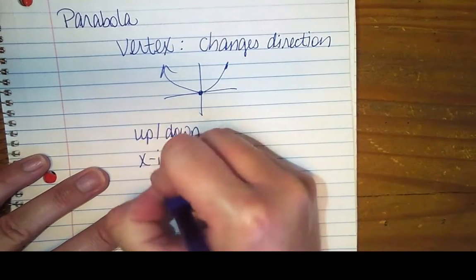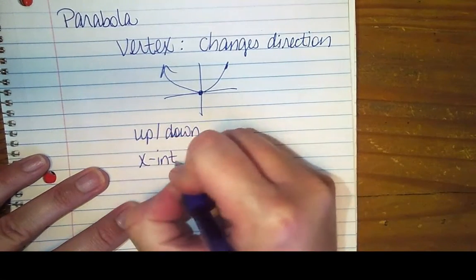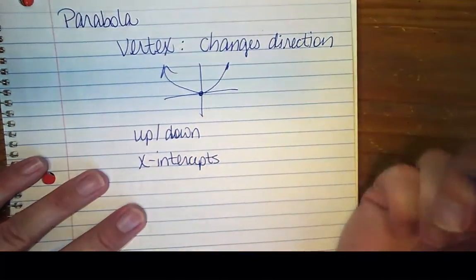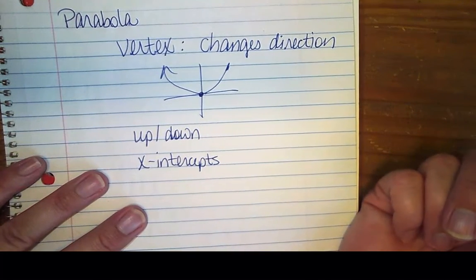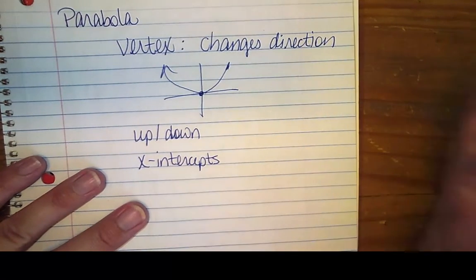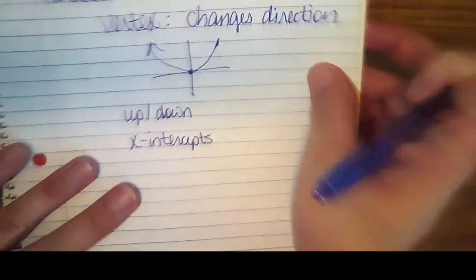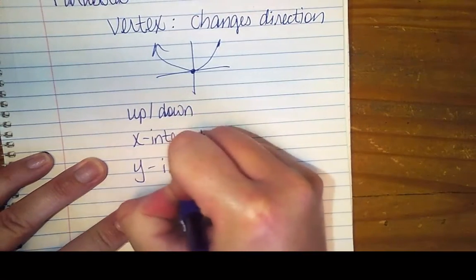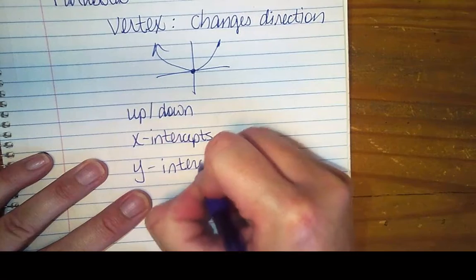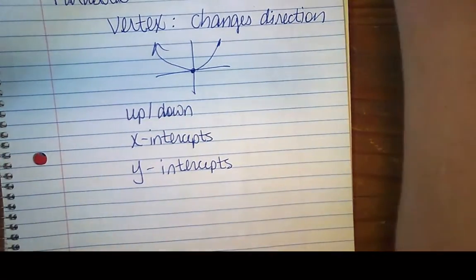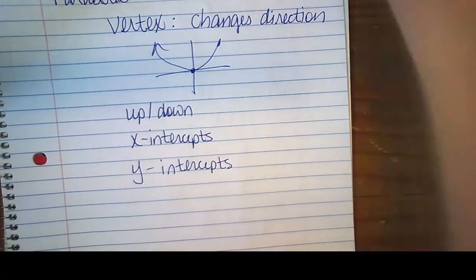Another thing is going to be its x-intercepts — where does it hit the x-axis? Wherever it hits the x-axis will make it unique from every other parabola. And then the last one is going to be your y-intercepts.